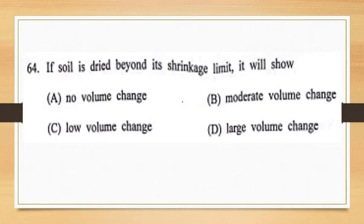The next question is: if soil is dried beyond its shrinkage limit, it will show — and options are given. In the semi-solid state the soil remains fully saturated and any reduction in the volume of water results in an almost equal reduction in the soil mass. A further reduction in water content brings about a state when, with a decrease in moisture, the volume of soil mass does not decrease any further but remains the same. The boundary water content is called the shrinkage limit. Therefore the answer is option A, that is no volume change.